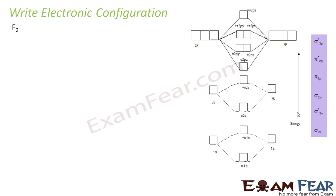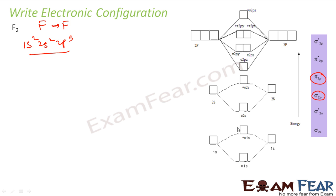Let's take the example of fluorine. Fluorine is also similar to oxygen — sigma 2p comes before pi 2p. F2 is two fluorine atoms. The atomic configuration of fluorine is 1s2, 2s2, 2p5. We fill 4 electrons from the inner shells, then 10 electrons from the 2p orbitals to complete the molecular orbital configuration of F2.